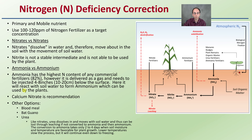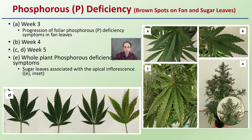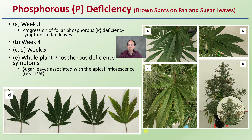Looking at phosphorus deficiency: we see brown spots on fan and sugar leaves. Here is week three, the progression of foliar phosphorus deficiency symptoms in the fan leaves; then week four; and week five shows the most advanced symptoms, including whole-plant phosphorus deficiency symptoms in sugar leaves associated with the apical inflorescence. Overall, I don't see this very often, so really scrutinize these images carefully — there are other pathogens or issues that could be causing similar symptoms.